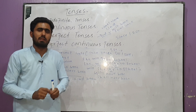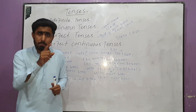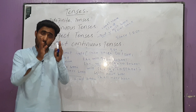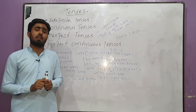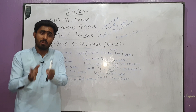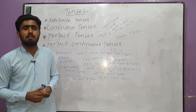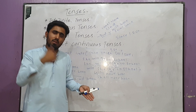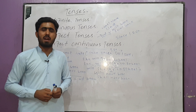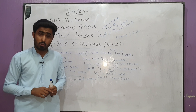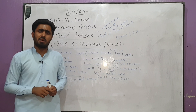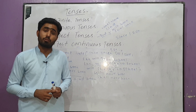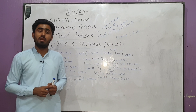Quick revision in a few minutes. The first three tenses are indefinite — helping verbs: do/does, did, will/shall. The next three tenses are continuous — helping verbs: am/is/are, was/were, will be/shall be. The next three tenses are perfect — helping verbs: has/have, had, will have/shall have. The last three tenses are perfect continuous — helping verbs: has been/have been, had been, will have been/shall have been. Verb forms: present indefinite — first form; past indefinite — second form; future indefinite — first form. All continuous tenses — ing form (fourth form). All perfect tenses — third form. All perfect continuous tenses — ing form again.